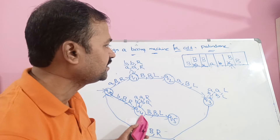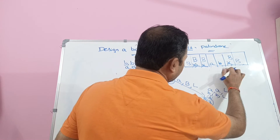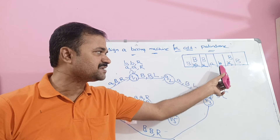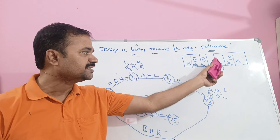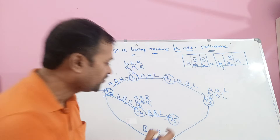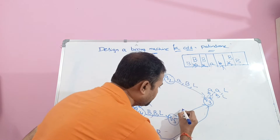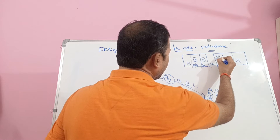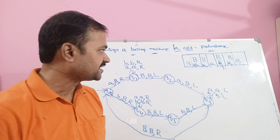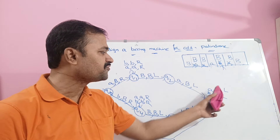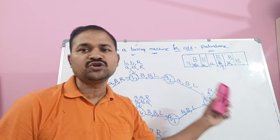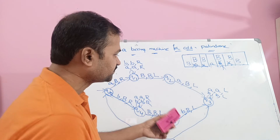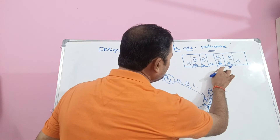We move one position to the left and the next state is Q5. The second symbol from the left is B, and the second symbol from the right is also B — they match. This B is translated into the blank symbol. If we apply any number of A's and B's on Q3, don't change them but move the head towards the left until we get the blank symbol.